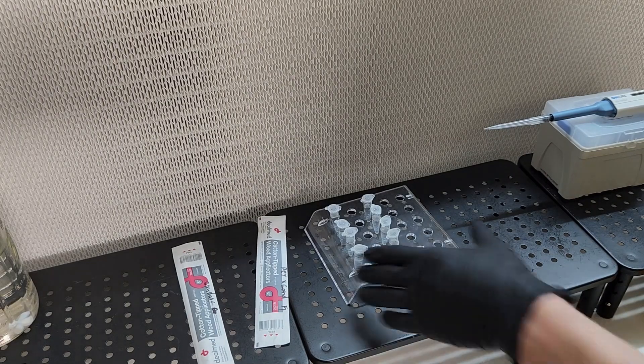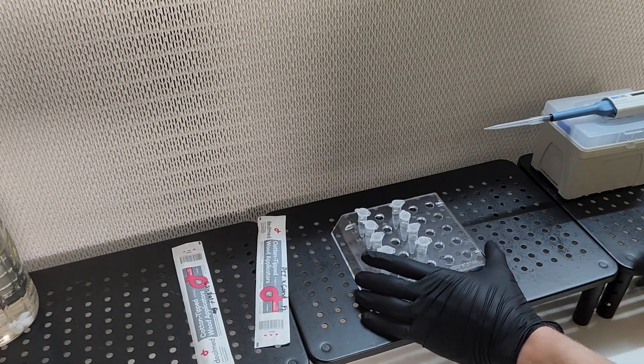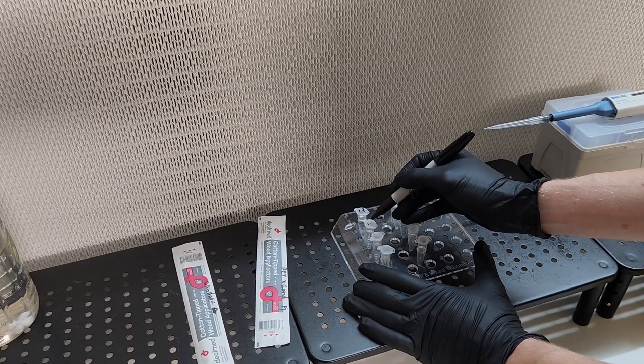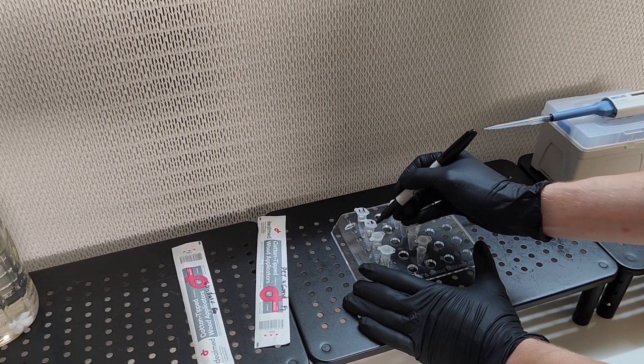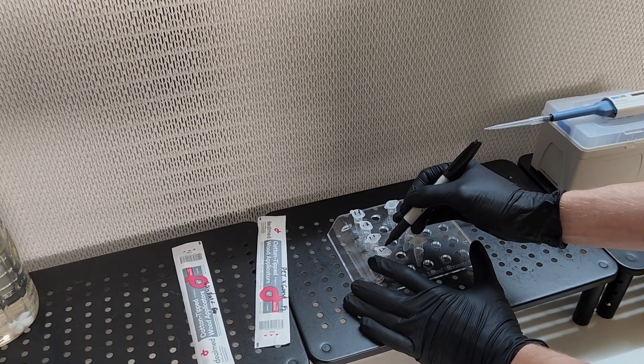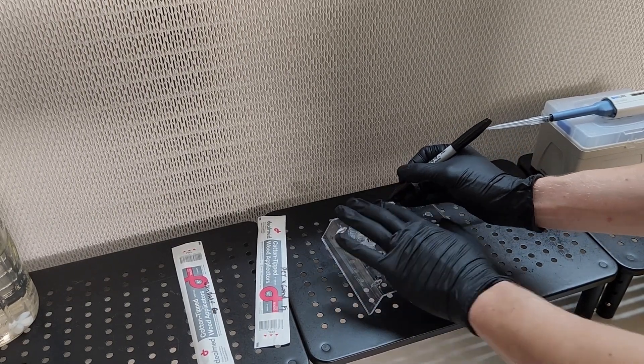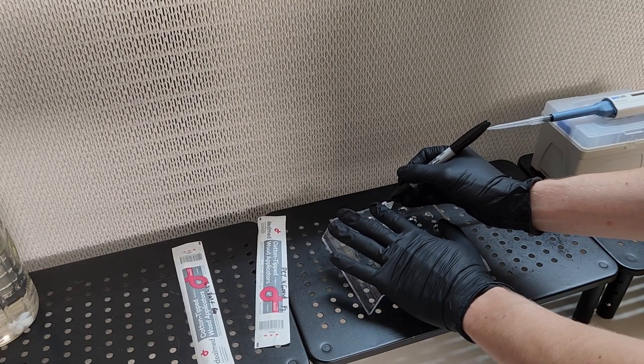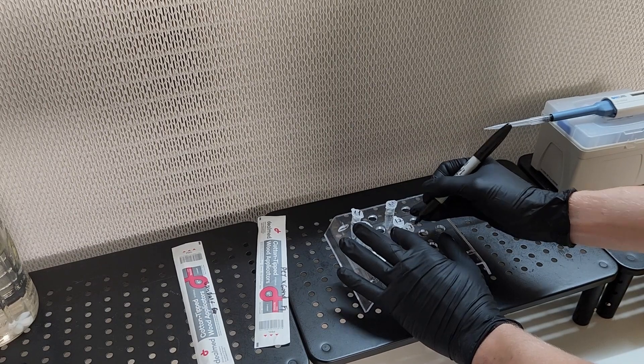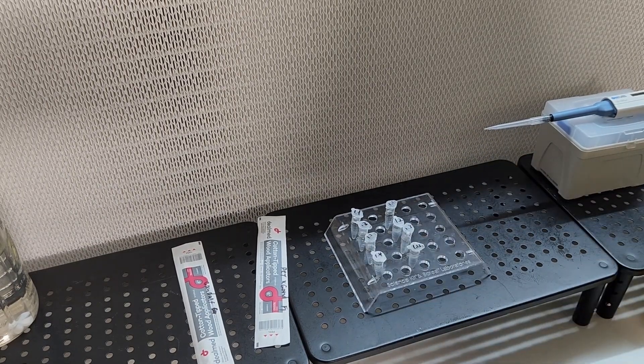Now that you have autoclaved your tween 20 solution and your tools it's time to set up your workspace. Take out a rack in which you can hold your micro centrifuge tubes on, take your tools out, clean everything off, and we're going to want to label our micro centrifuge tubes. This will help keep everything organized.